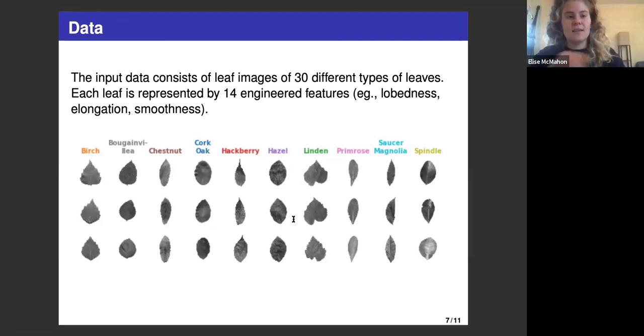When they describe this adaptation, they run it on an example. The image data that they use is leaf data. Each data point is an image of a leaf, and there are 14 engineered features, such as lobeness, elongation, smoothness, associated to each leaf. They'll have a certain number saying how smooth they are, for example. And there's 30 different leaf types.